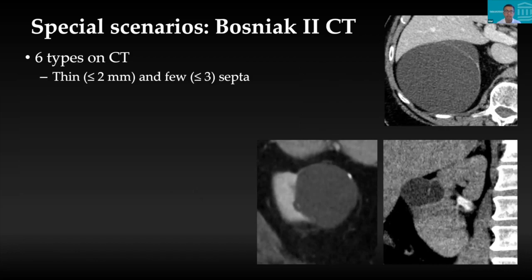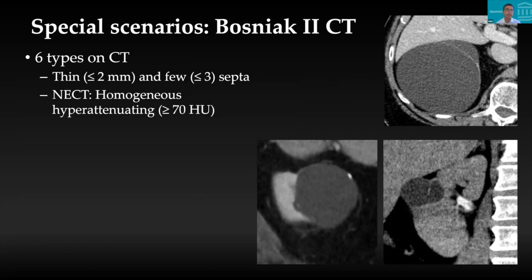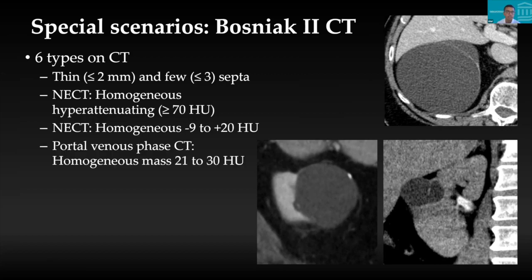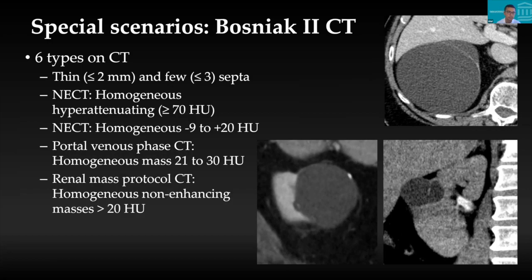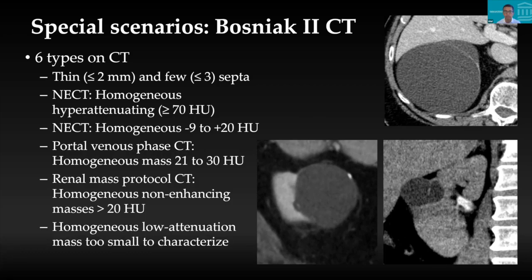Special scenarios for Bosniak type II: on unenhanced CT, a homogeneous hyper-attenuating lesion (hyperdense cyst) or a homogeneous lesion less than 20 HU can be called type II. On portal venous phase only, a homogeneous mass measuring around 25 HU is also type II. On renal mass protocol, a homogeneous non-enhancing mass above 20 HU, or a tiny lesion too small to characterise, can also be called type II. The word homogeneous is critically important — if you put one big ROI on a heterogeneous lesion and get 15 HU, you cannot dismiss it as a cyst, because placing smaller ROIs may reveal attenuation values of 24, 17, and 33 HU, indicating a heterogeneous lesion requiring contrast-enhanced CT.